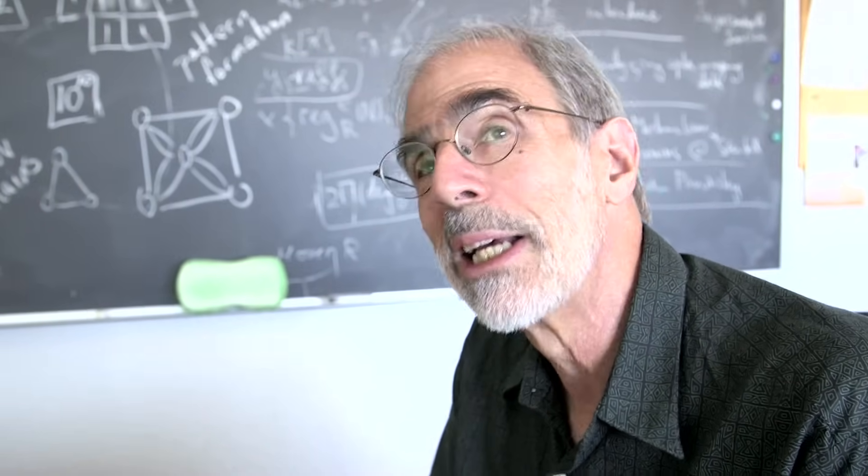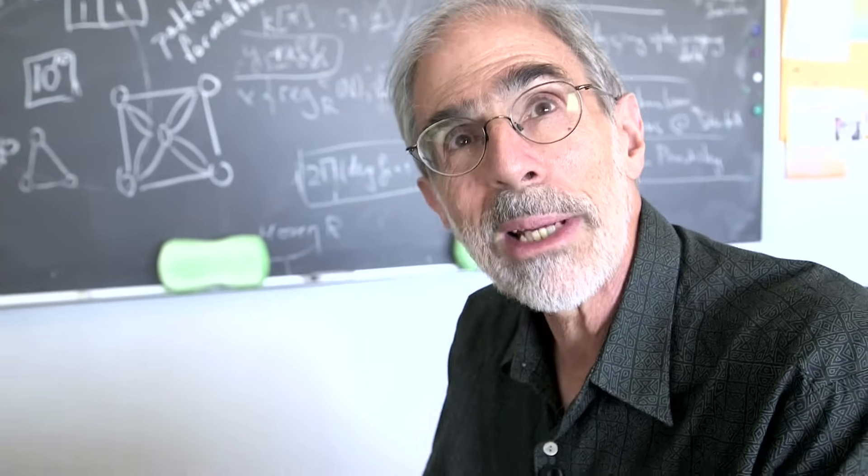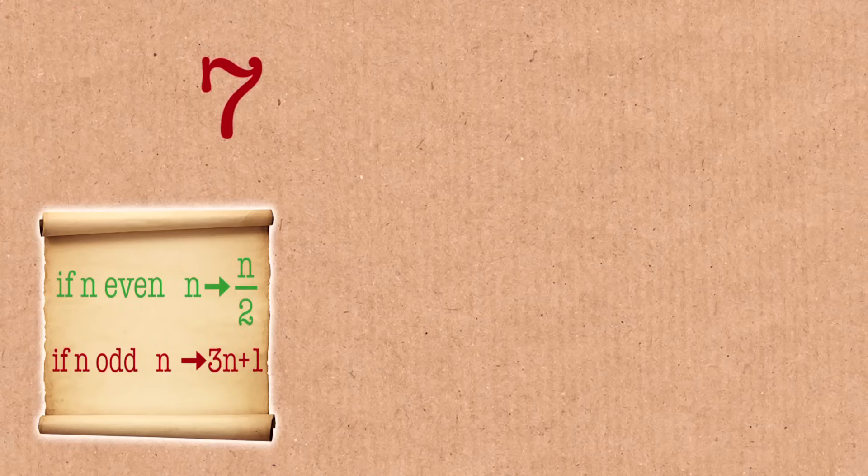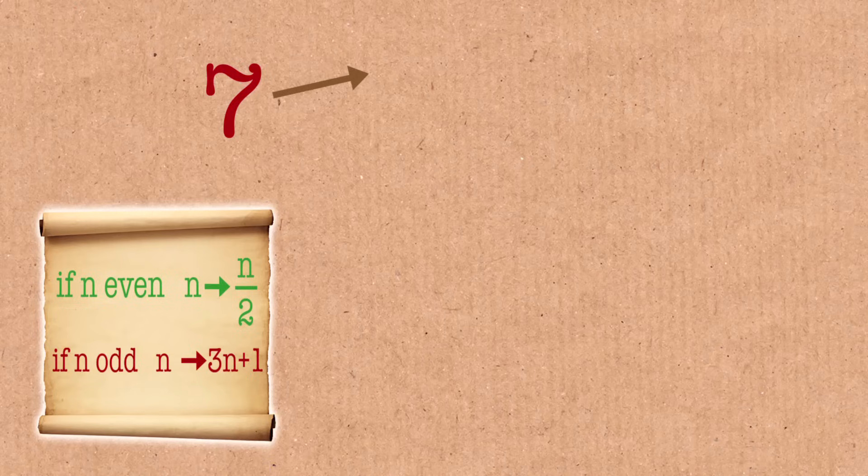And I'm interested in what happens to n. Does it grow to infinity? Does it get small? Let's see what happens with 7. 7 seems to be an odd number, so I multiply by 3 and add 1. 3 times 7 is 21, check me on this, and add 1 is 22. I go to 22.